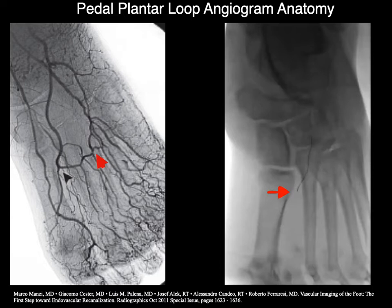So angiographically, what does that look like? Here's a normal angiogram from Marco Manzi's article back in 2011. You can see the dorsalis pedis artery giving rise to the deep plantar artery or deep perforating artery, really between the base of the first and second metatarsal where the black arrowhead is. It then courses laterally, and around the third or fourth base of the metatarsals, depending on the obliquity of the angiogram, you can see the anastomosis with the lateral plantar artery.